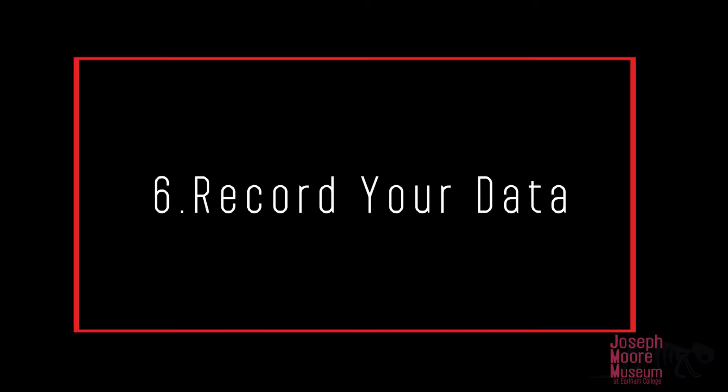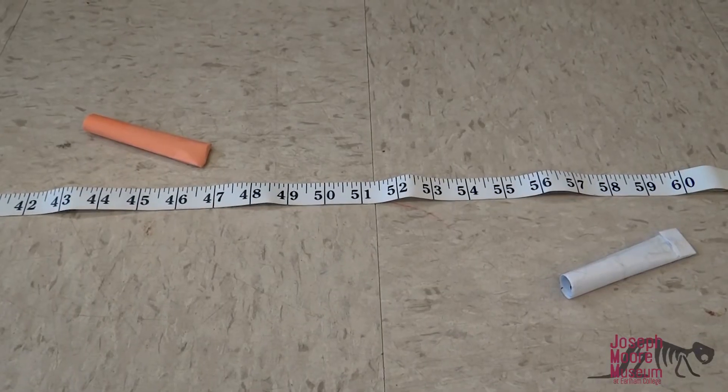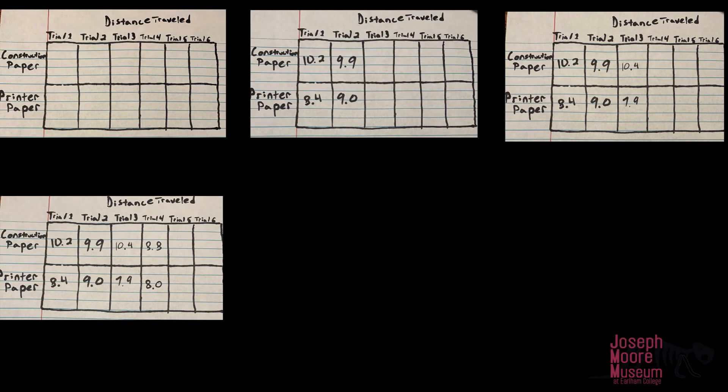Create a table and graph of your results. In addition to the result for the dependent variable, include the average distance for each rocket in your table.